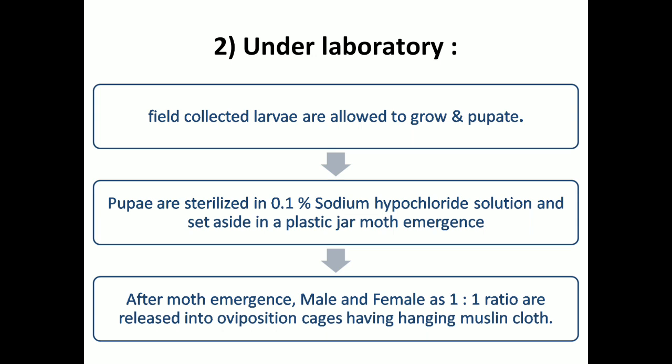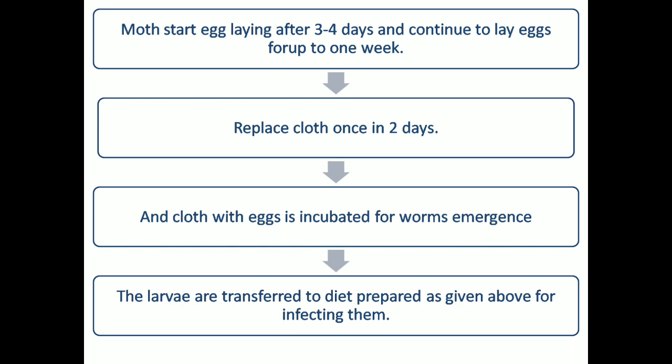The second method is conducted under laboratory conditions. Field collected larvae are allowed to grow and pupate. Sterilize the pupa in a 0.1% sodium hypochlorite solution and leave them in a plastic jar for moth emergence. After the moths emerge, release males and females at a 1:1 ratio into oviposition cases containing a hanging muslin cloth. After 3 to 4 days, moths start egg laying and continue for up to 1 week.